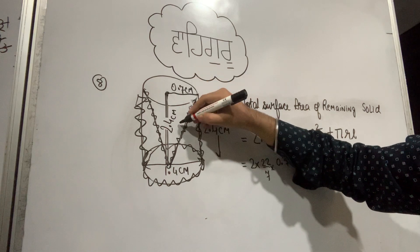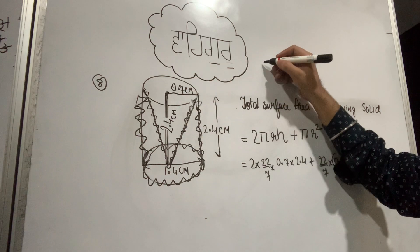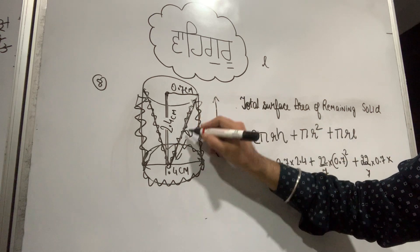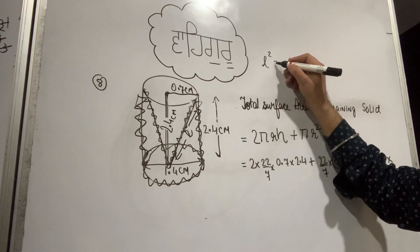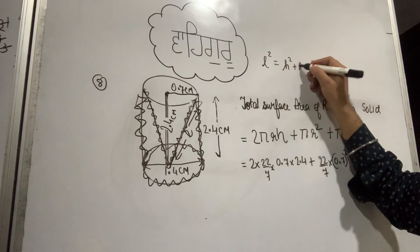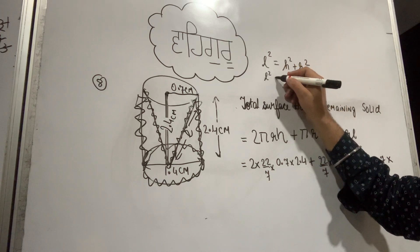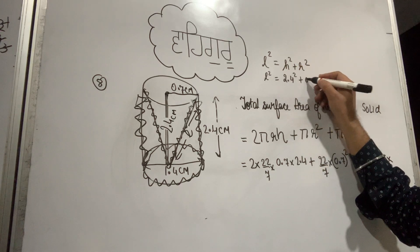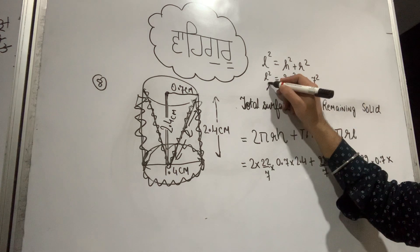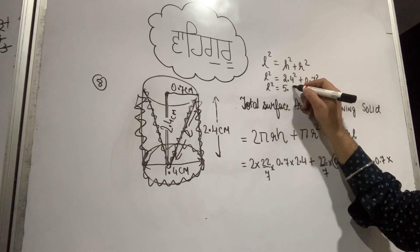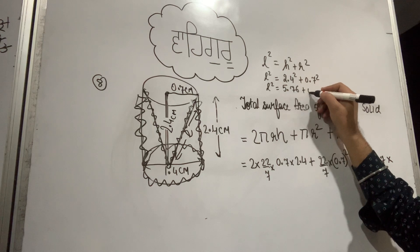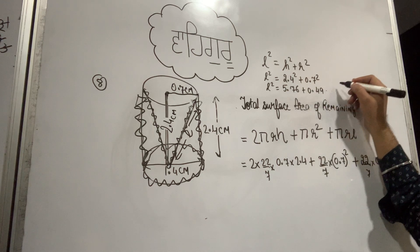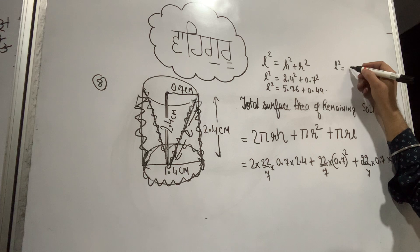We apply the Pythagoras theorem to find the slant height. L squared equals h squared plus r squared. Here h equals 2.4 and r equals 0.7. So L squared equals 2.4 squared plus 0.7 squared, which gives 5.76 plus 0.49.